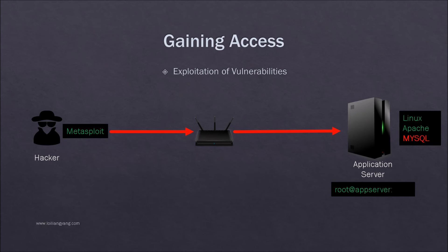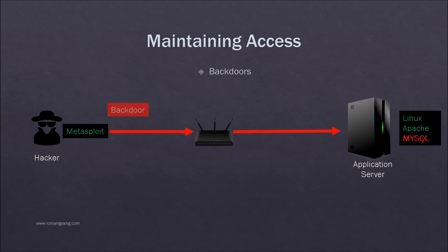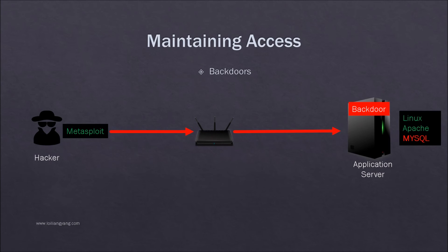Maintaining access involves the use of rootkits to maintain consistent access into the systems. A backdoor is installed to ensure the hacker always has ready access in the future, even if the system gets patched. This backdoor quickly enables the hacker to gain administrative access and allows malicious activities to be conducted effortlessly.